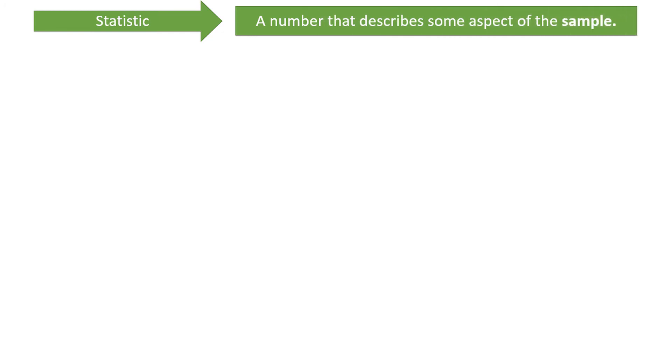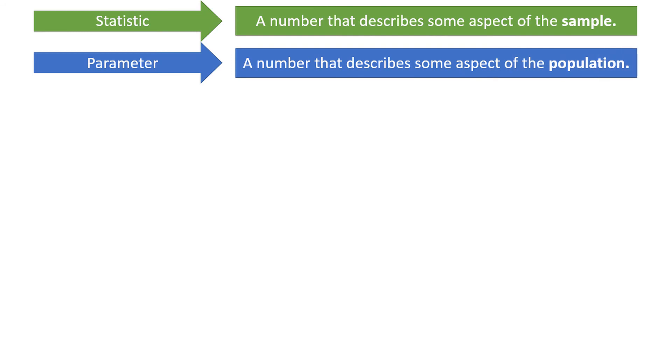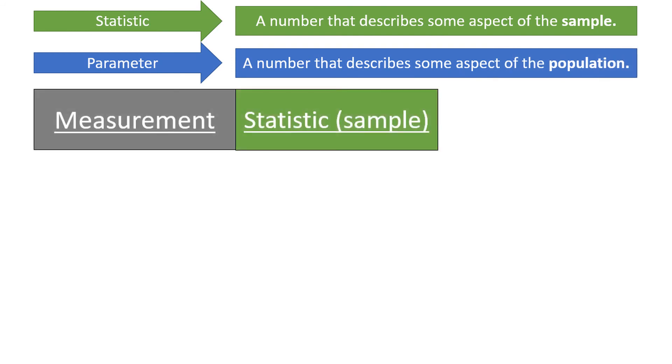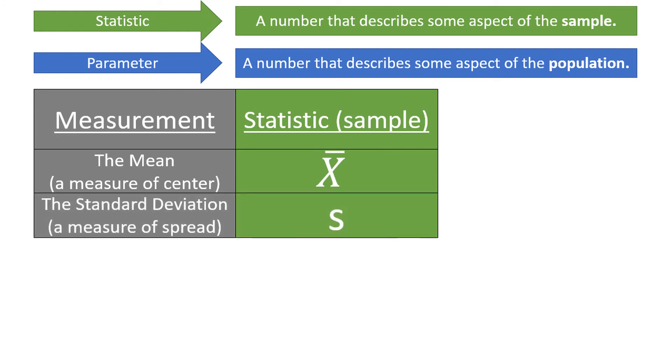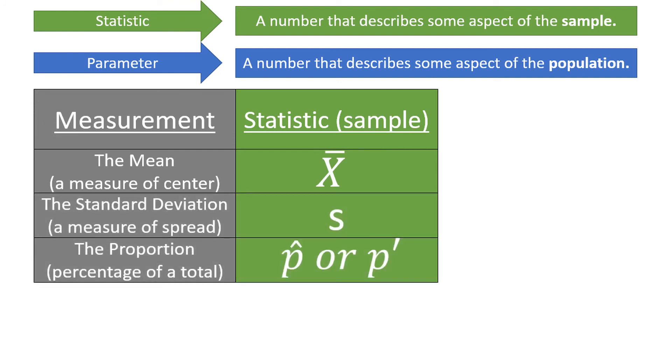Let's start off by reviewing the difference between a statistic and a parameter. A statistic is a number that describes some aspect of the sample. Examples of statistics are x-bar for the mean, s for the standard deviation, and p-hat or p-prime for a proportion. These values are all calculated based on a sample, which is why we call them statistics.